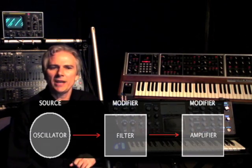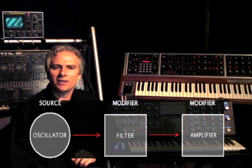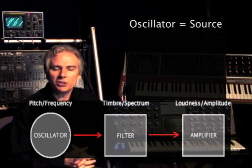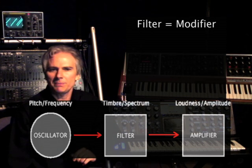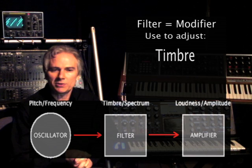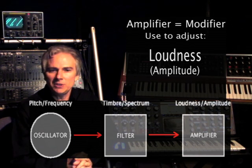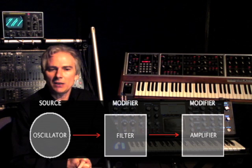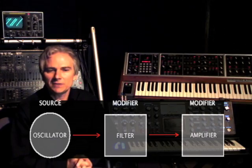Looking at another diagram, you'll see that we have an oscillator to a filter and an amplifier. This is the audio path found in most any synthesizer. The oscillator is a source — if you want to adjust the pitch or frequency, go to the oscillator. The filter is a modifier — if you want to adjust the timbre or the spectrum, go to the filter. And if you want to adjust the loudness or amplitude, go to the amplifier. These are a source, followed by a modifier, and a second modifier. Understanding this is the basic foundation of synthesizer programming.